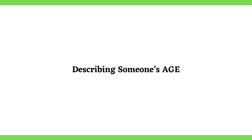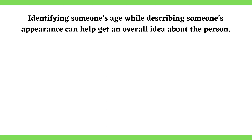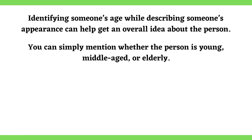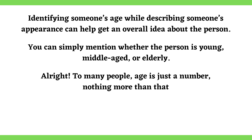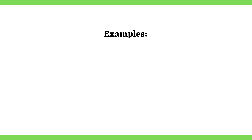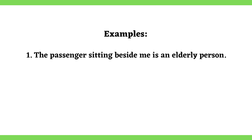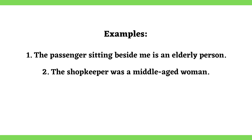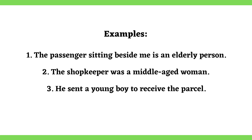Describing someone's age: Identifying someone's age while describing their appearance can help get an overall idea about the person. You can simply mention whether the person is young, middle-aged, or elderly. In many cultures, asking about someone's age may sound offensive, especially the age of women. Examples: The passenger sitting beside me is an elderly person. The shopkeeper was a middle-aged woman. He sent a young boy to receive the parcel. All the players on the team were teenagers.